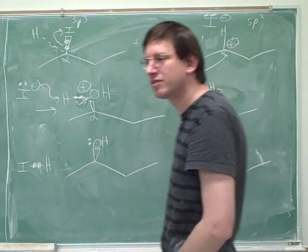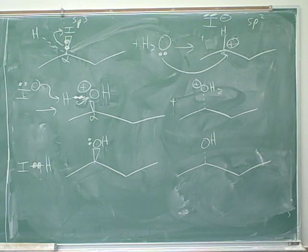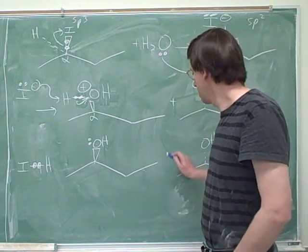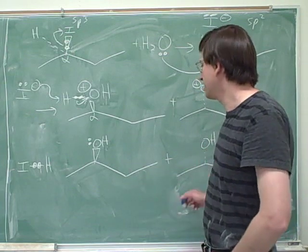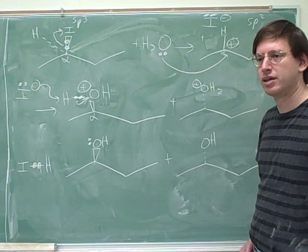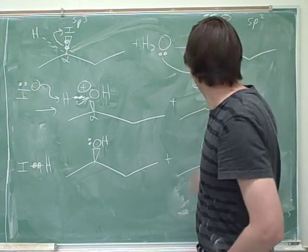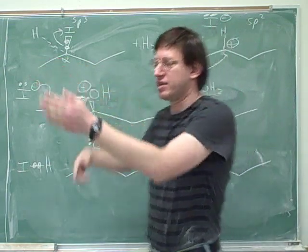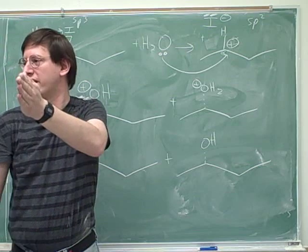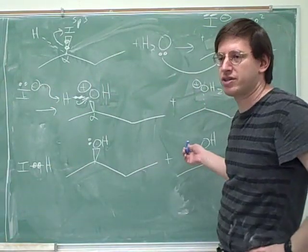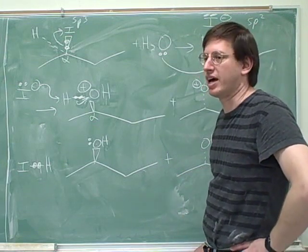If they say draw the major products, are we going to get more of one product, more of the right-hand product, or equal amounts of both? Equal. How can you explain why that is? Remember that at this point the carbocation is trigonal planar — it's just as easy to attack from one side as from the other. So generally speaking, when you attack something trigonal planar, you get equal amounts of the two products unless there's something blocking one of the sides.